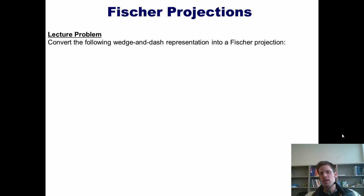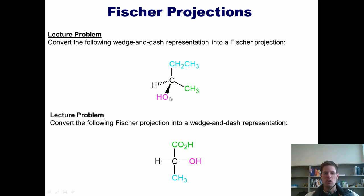So do you think you understand that? Well, let's see by doing an example problem. I want you to convert this wedge and dash representation into a Fischer projection. Once you've done that, I then want you to go the opposite direction and convert this Fischer projection into a traditional wedge and dash representation. You're welcome to pause the video now and try this on your own because I'm going to give you the answers on the next slide.